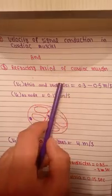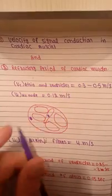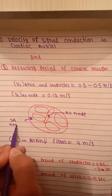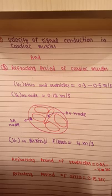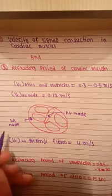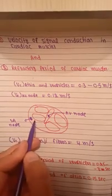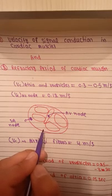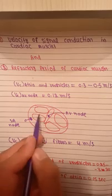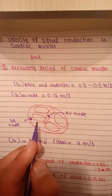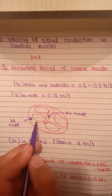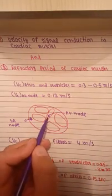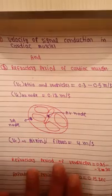We know that velocity of signal conduction or velocity of impulse through the AV node is slow. The SA node is the part of the heart where electrical excitation takes place, and electrical activity starts from the SA node. This electrical signal spreads throughout the heart. The velocity of impulse in the atria and ventricles is about 0.3 to 0.5 meters per second. The velocity of conduction through the AV node is slow.